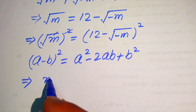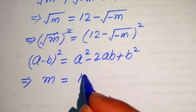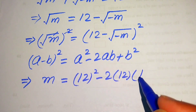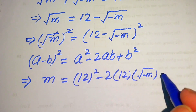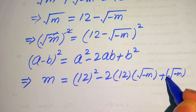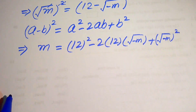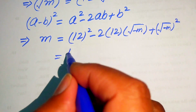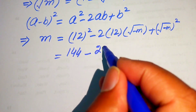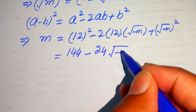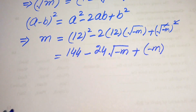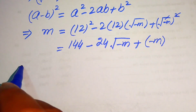We expand this identity. On the left hand side the square and square root cancel and we get m. On the right hand side: 12 squared minus 2 times 12 times square root of minus m, plus square root of minus m whole squared. So 12 squared equals 144, and the square root squared gives minus m only.